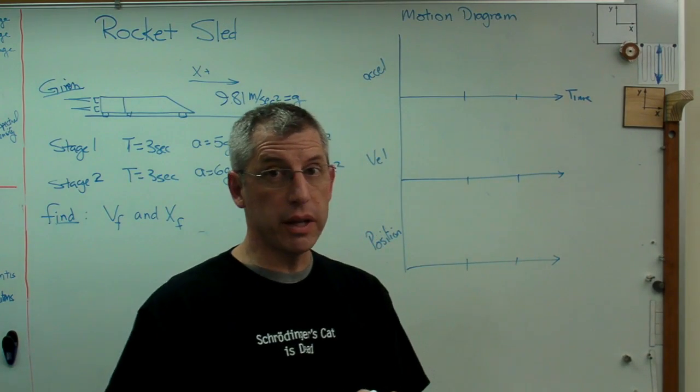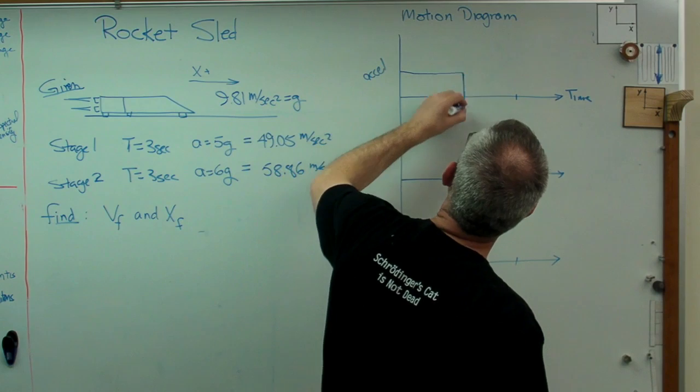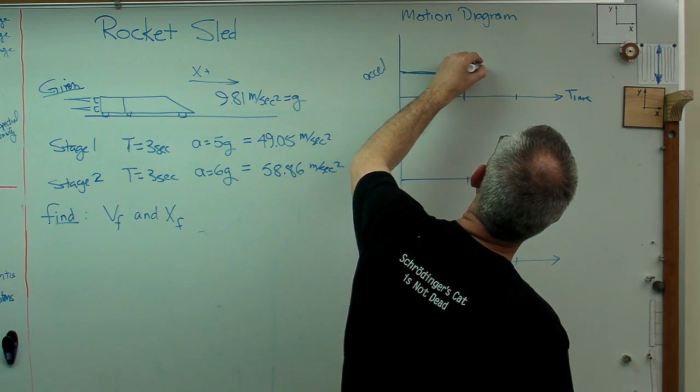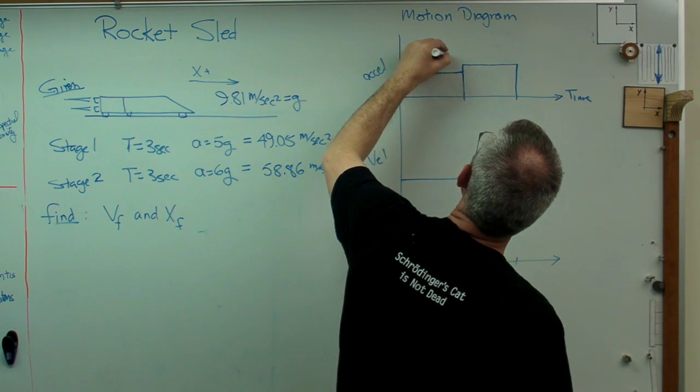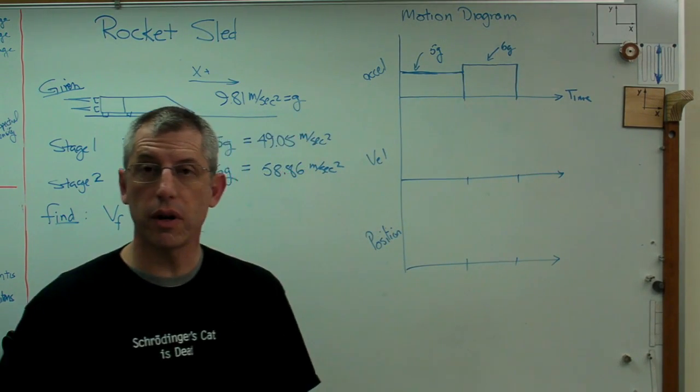Well, what's the first? It's constant acceleration on both of these. So the first one is going to look like that. Is that constant? That's close. And I bump up just a little bit. So that's five G's and that's six G's. All right. So far, so good.